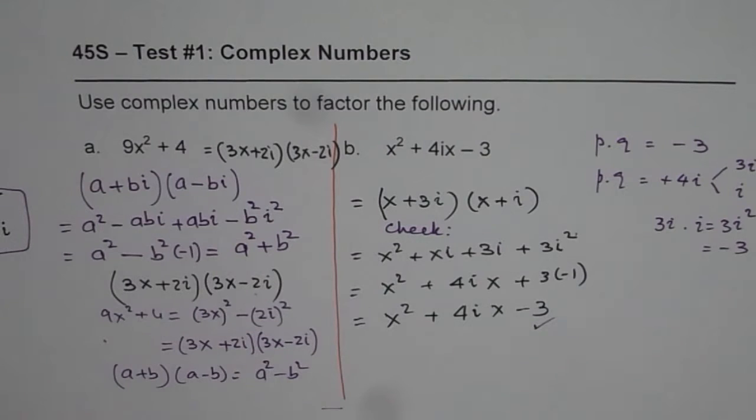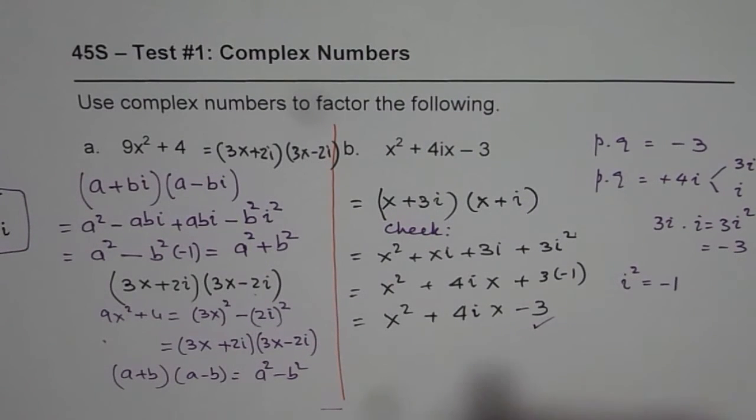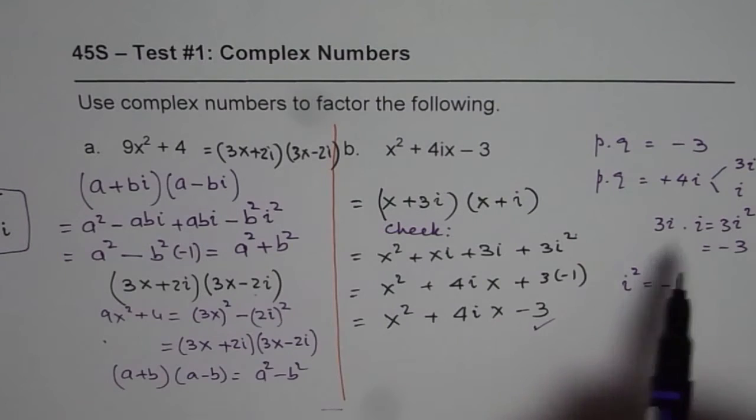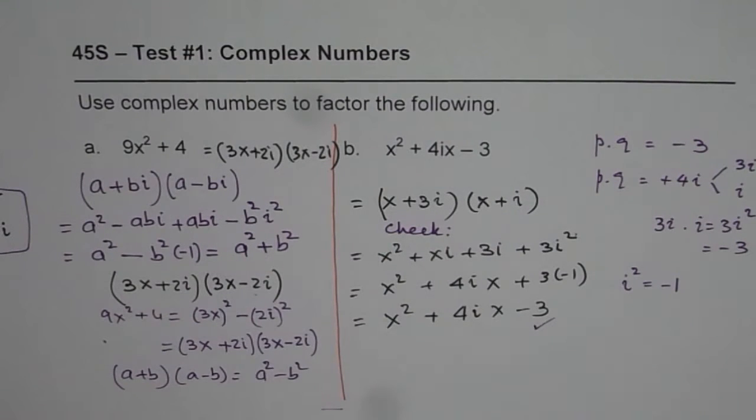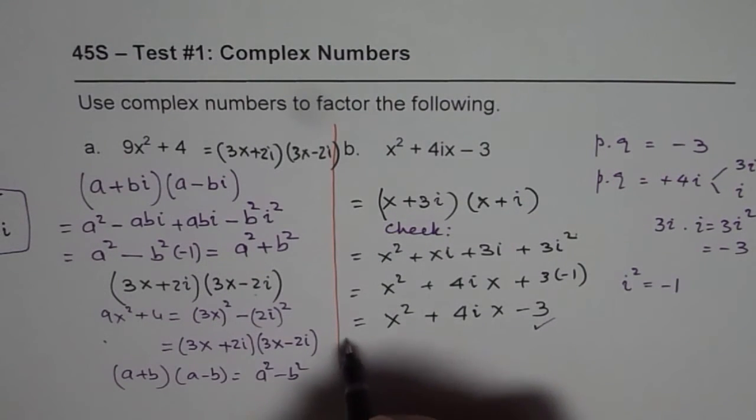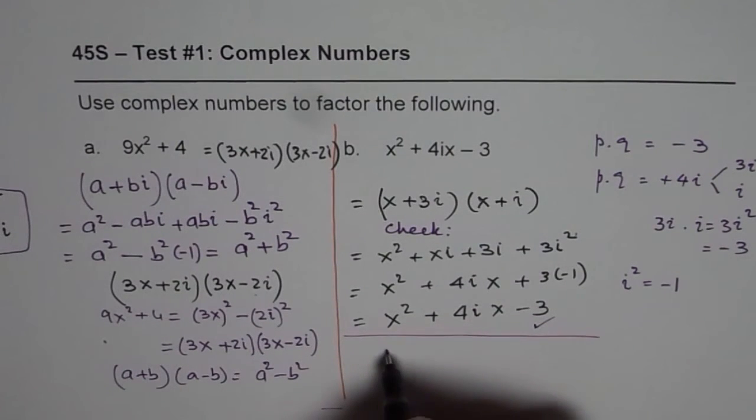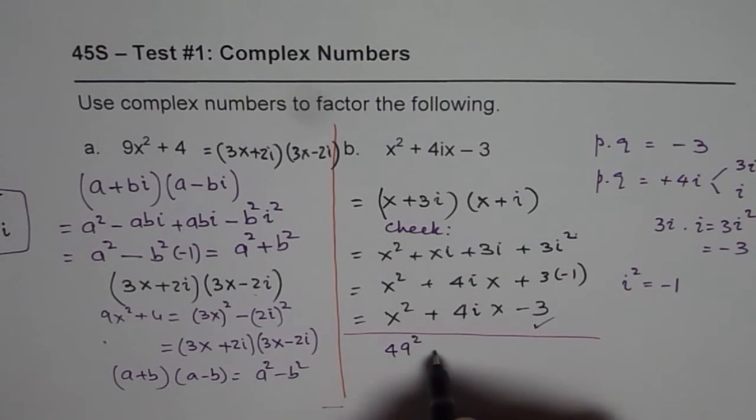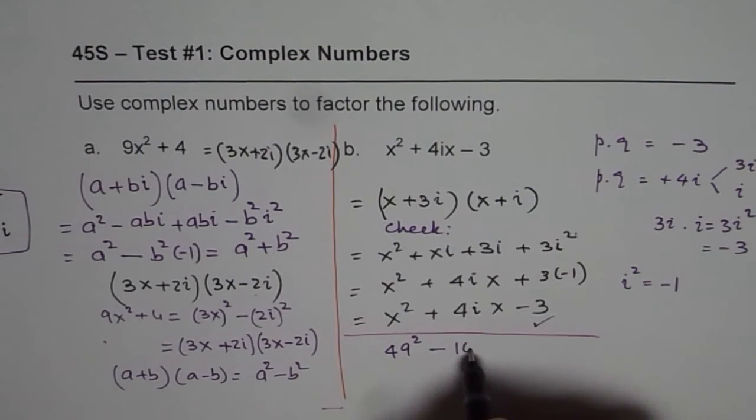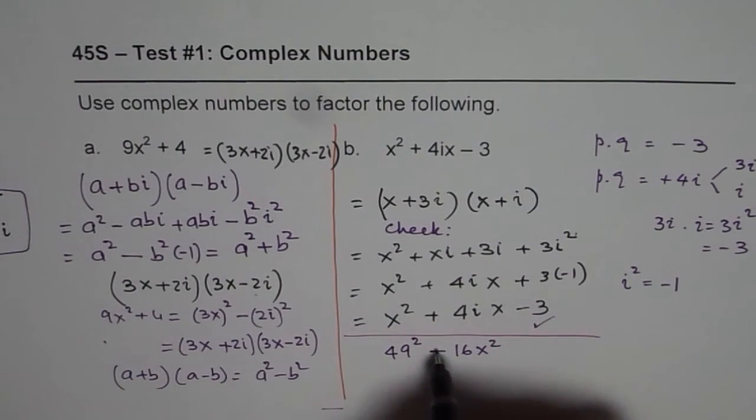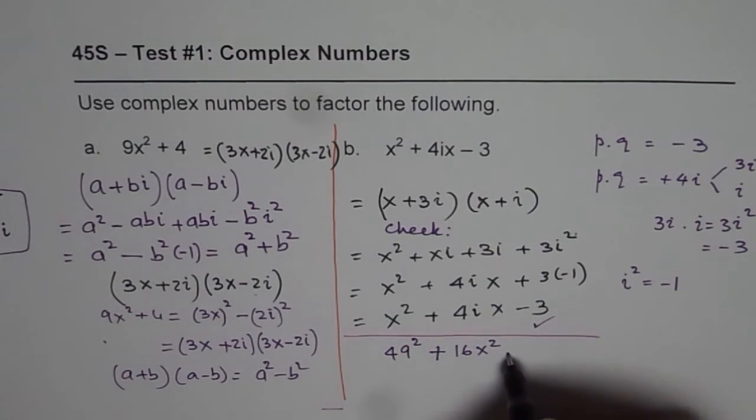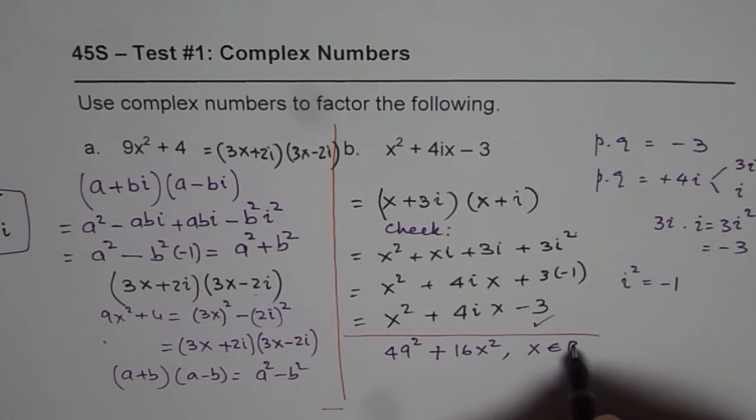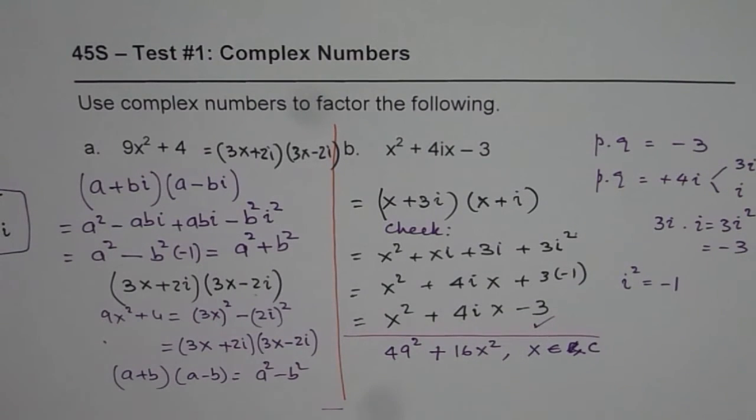So remember since i² is equals to -1, we can now factor sum of squares also. So as a practice you can have few questions. For example you can factor 49² + 16x². Rather let me make it plus, where x belongs to complex numbers. So you can do this question on your own. 49² + 16x² where x belongs to complex numbers. Thank you.